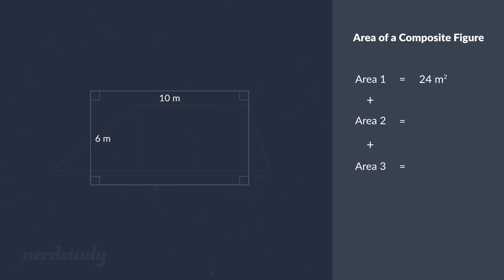So all we have to do to find the area of this rectangle is to multiply length times width which would be 6 meters times 10 meters giving us 60 meters squared.